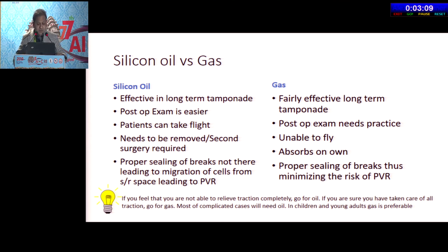With gas, it gives fairly effective long-term tamponade. Post-op exam needs practice, and the patient is unable to fly for at least two to three weeks. Gas absorbs on its own and you don't need a second surgery. It provides proper sealing of breaks, thus minimizing the risk of PVR. If you feel you cannot relieve traction completely, go for silicone oil. If you are sure you've taken care of all traction, go for gas.